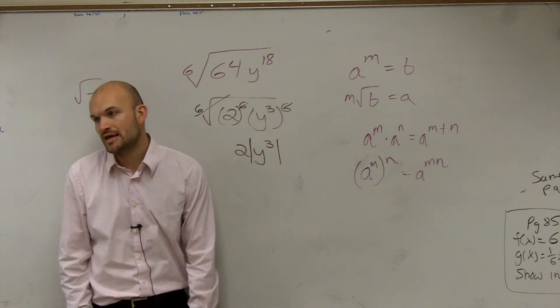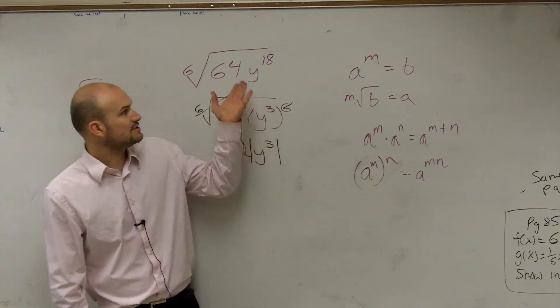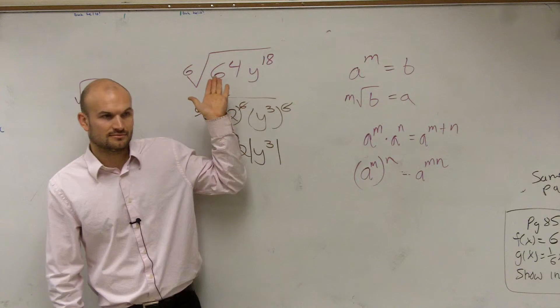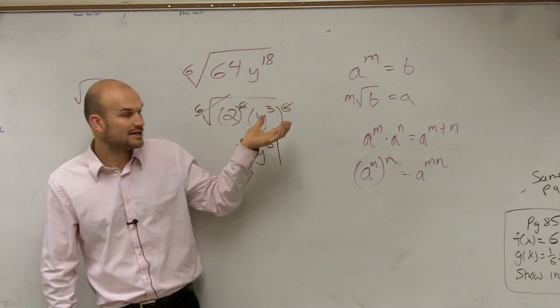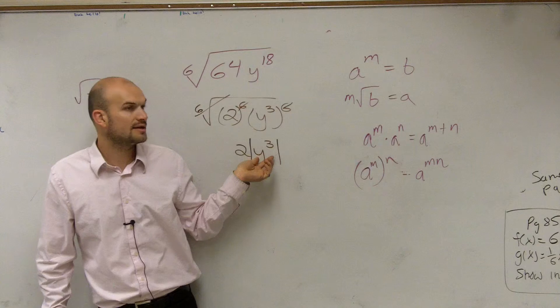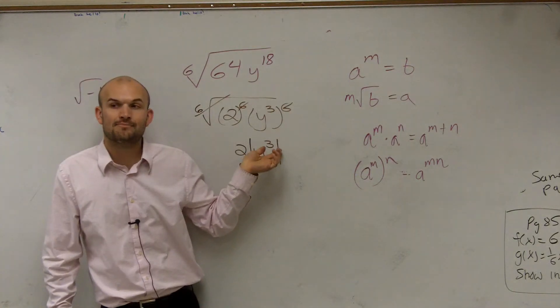So we have to make sure we include just the absolute value of y cubed. So this is when you include the absolute value, if you guys want to write this down. Whenever you're taking the even root, you do your simplifying.